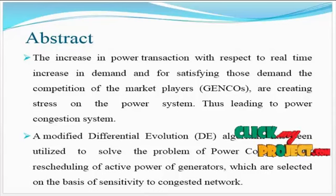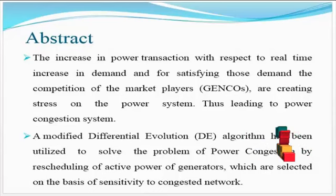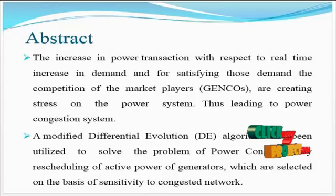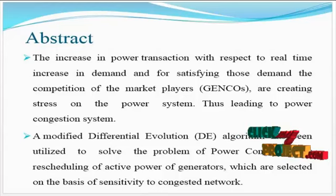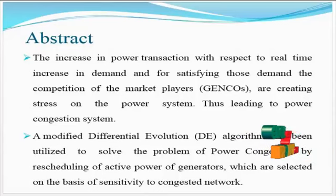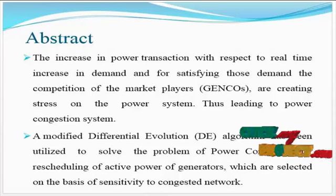To maintain market efficiency, congestion needs to be relieved in a fast and efficient manner. Generator rescheduling using a genetic algorithm-based approach is proposed in this paper. Using this, identification of minimum cost of rescheduling is preferred. The selected bus system for this proposed topology is the IEEE 30 bus system.